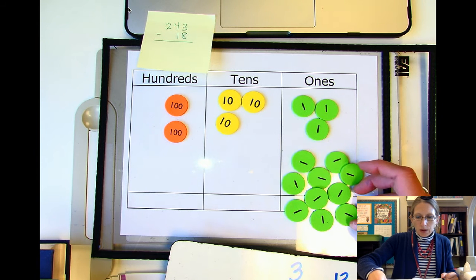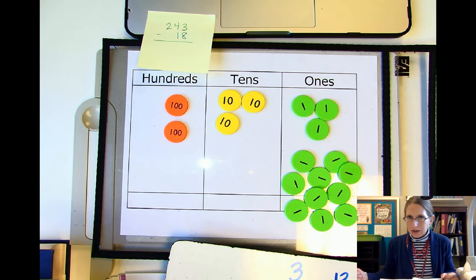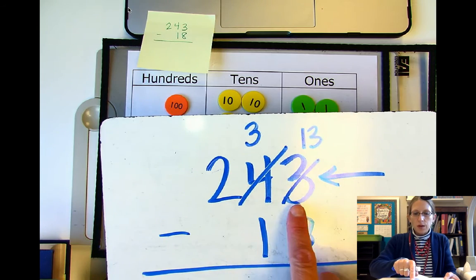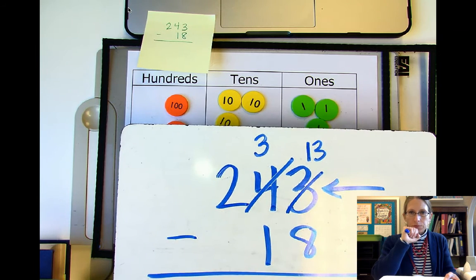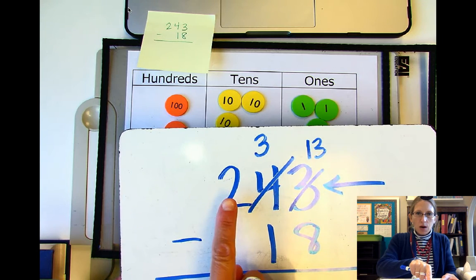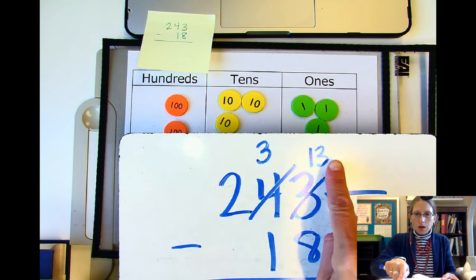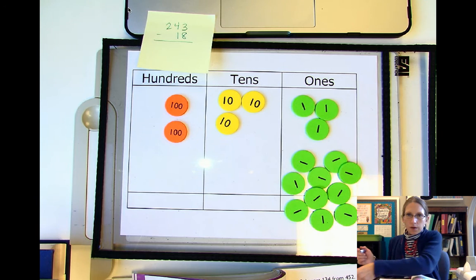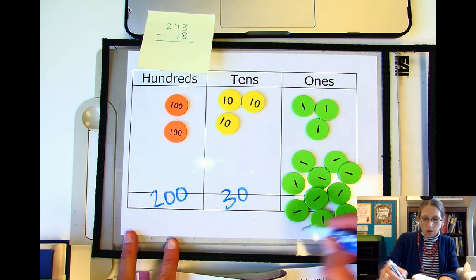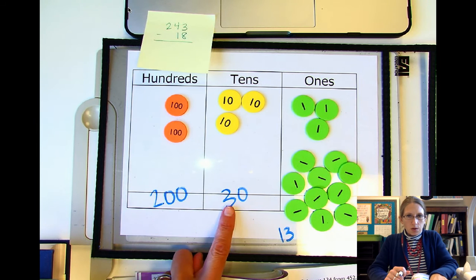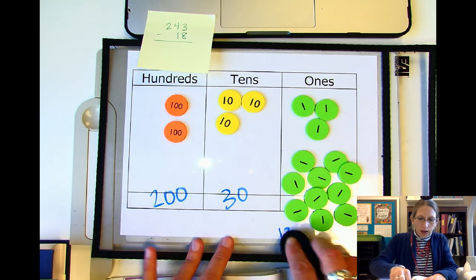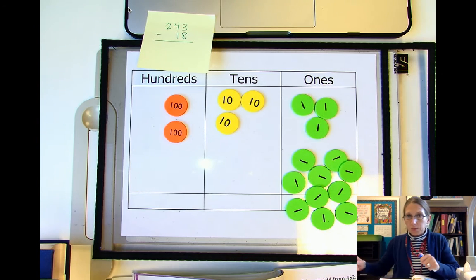Yes. And it's really important to think: do we still have the number we started with — 243? We have 230 plus 13, which is 230 plus 10 is 240 plus 3, so 243. Yes, we still have the same number. We're just renaming it. Now we can subtract eight.